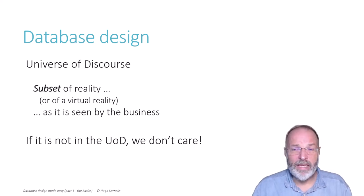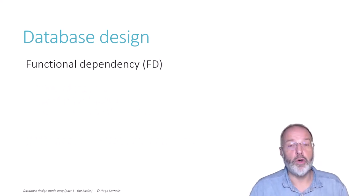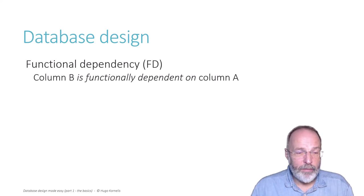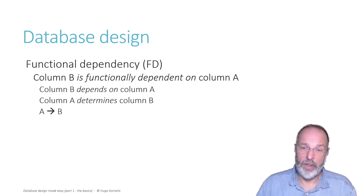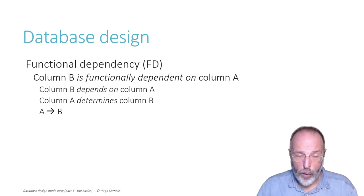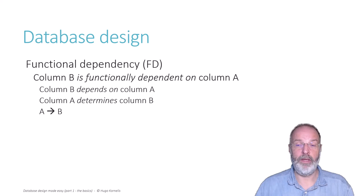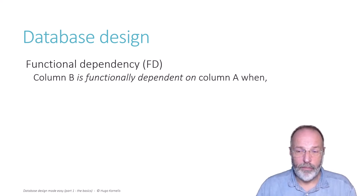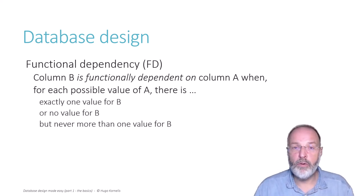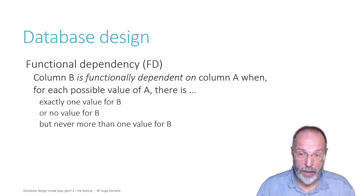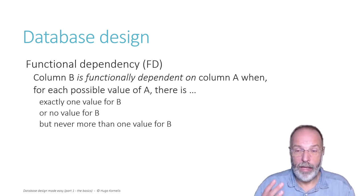The next term I want to define is functional dependency, or FD for short. We say that one column is functionally dependent on another column, or that column A determines column B — written with an arrowhead for short. All of these ways to phrase it mean the same thing: for every possible value of column A, there is at most one value for column B.